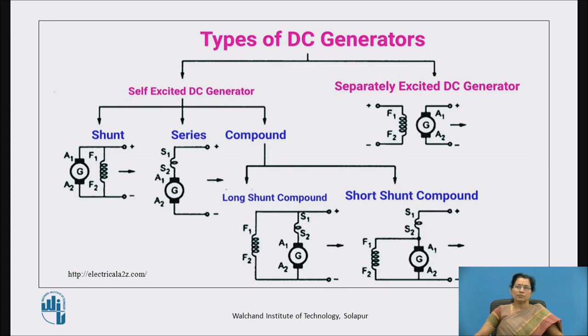These are the types of DC generators. Basically DC generators have two types: self-excited DC generator and separately excited DC generator.